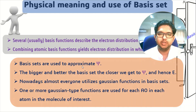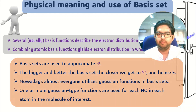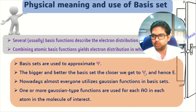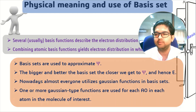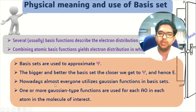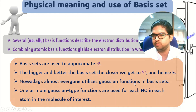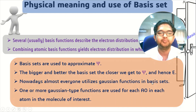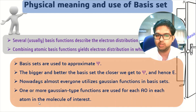The basis set is generally used to approximate the wave function. The bigger and better the basis set, the closer we get to the true wave function — and therefore the energy will be closer to the true value. Nowadays almost everyone utilizes Gaussian functions in the basis set. Generally, one Gaussian type function is used for each atomic orbital in each atom in the molecule of interest.